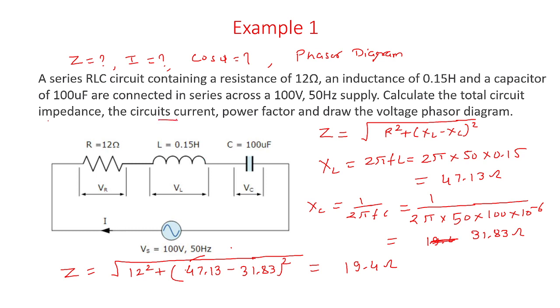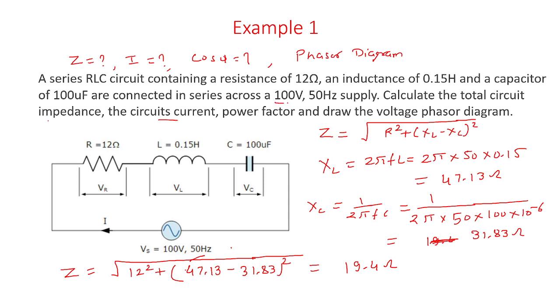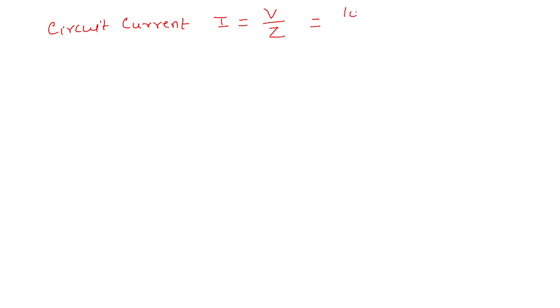Now we need to find the circuit current. It is very easy to find — circuit current is the ratio of voltage and impedance. Current is voltage divided by impedance. The voltage given is 100 volt and impedance is 19.4 ohm. So 100 divided by 19.4 gives the value of current as 5.14 ampere.